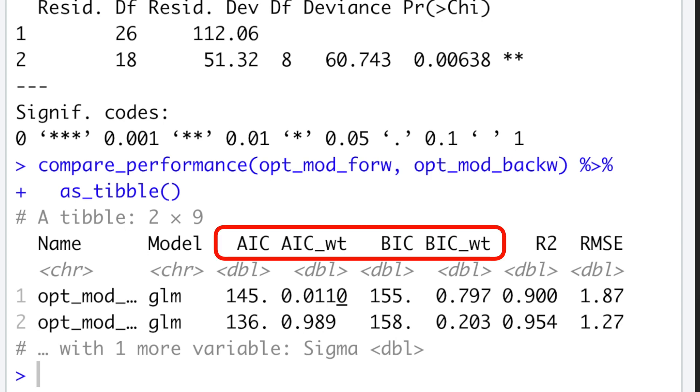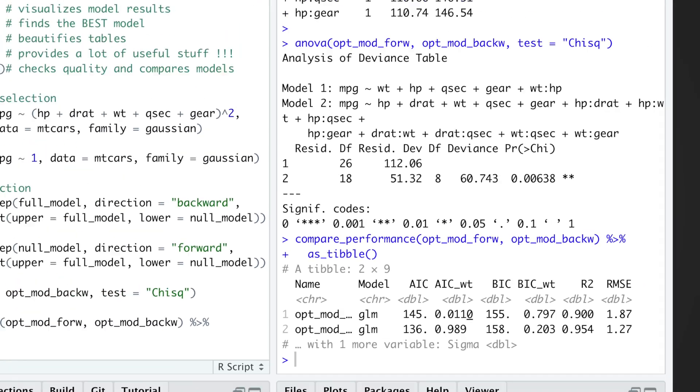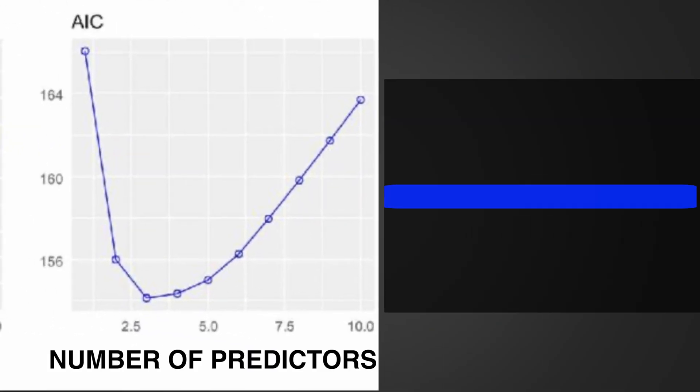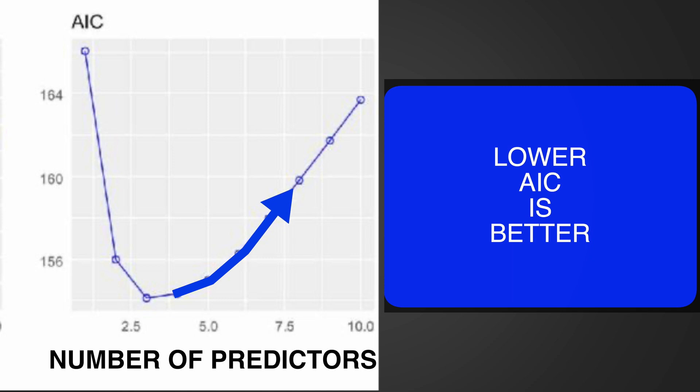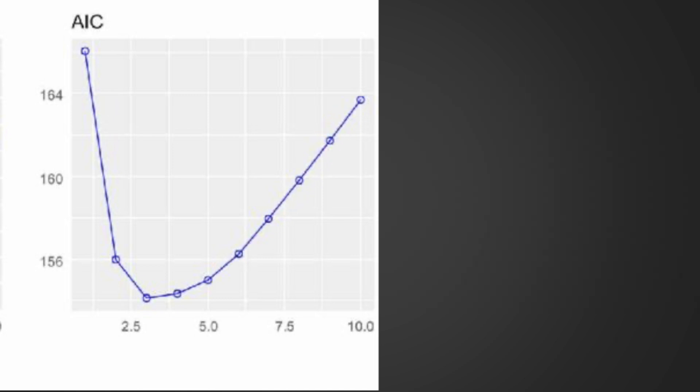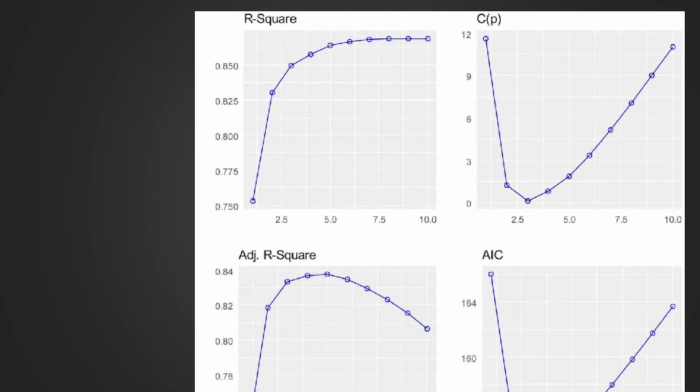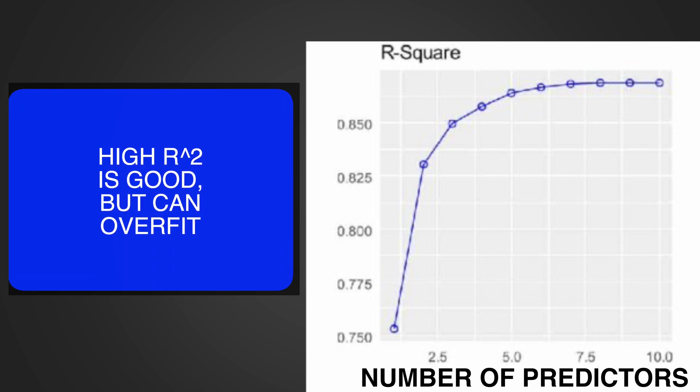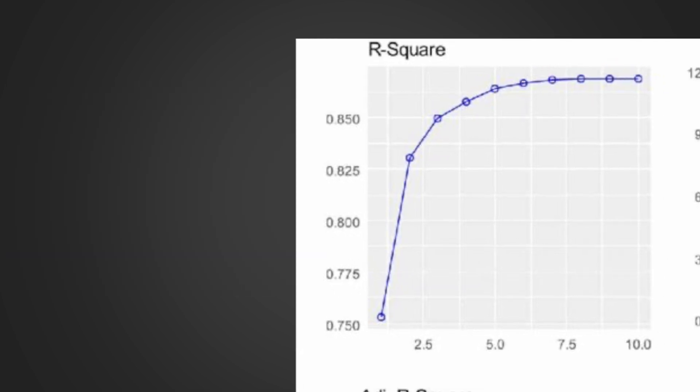Information criteria are used instead of other metrics, such as R-squared, because they show the fitness of the model, where this fitness is penalized by the number of predictors a model incorporates. In contrast to information criteria, R-squared will always increase with the increasing number of terms, and will eventually overfit the model.